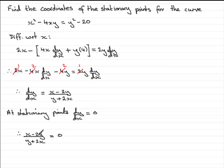And when we have a fraction that equals 0, if we were to multiply both sides by y plus 2x, we would end up with x minus 2y equaling 0. Now, when we've got this, we can rearrange this and say that, therefore, x equals 2y.